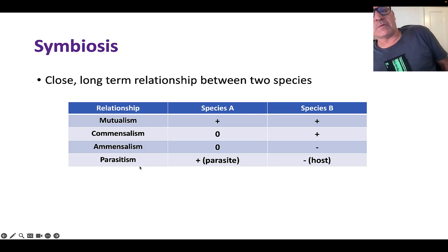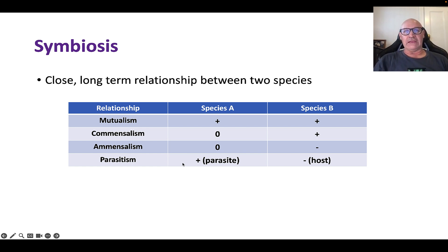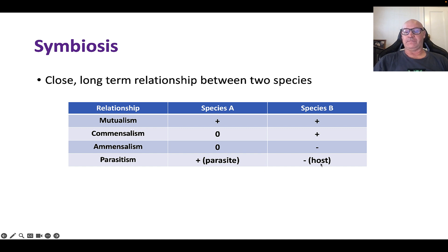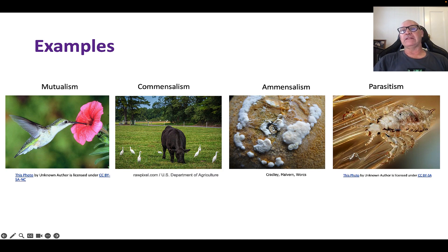The last symbiotic type is parasitism, where we have a parasite and a host. A parasite is an organism that lives on or in another organism, derives benefit from it, and causes harm to the host. The one that benefits is the parasite; the one that is harmed is the host. An example is head lice — the organism is harmed by having a parasite living on it.